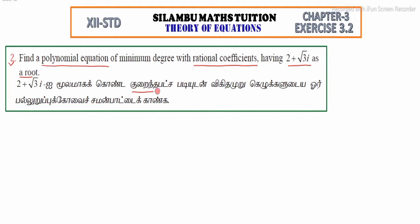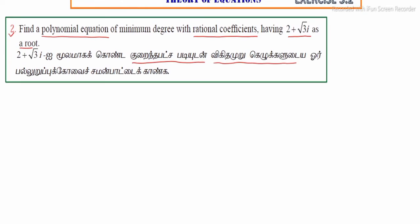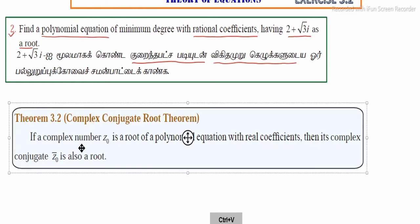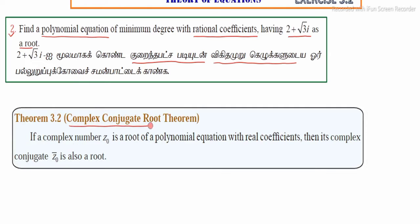Let's see. We'll find a polynomial equation of minimum degree with rational coefficients. To solve this, we'll use Theorem 3.2, the Complex Conjugate Root Theorem.